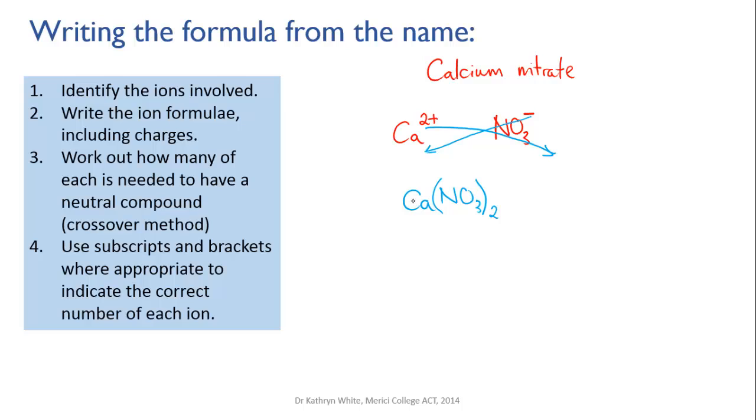Checking that it works by our total charges method, we've got one calcium that's a total positive charge of plus two. We've got two nitrates. Each of those is minus one. Two times minus one equals minus two and so we've got plus two and minus two and it cancels out nicely.